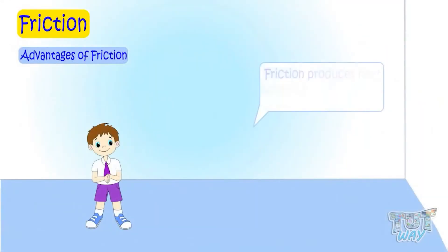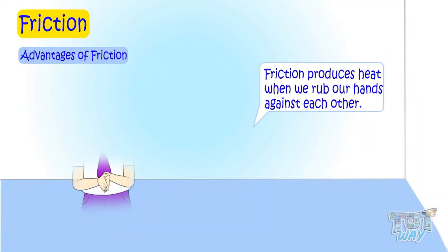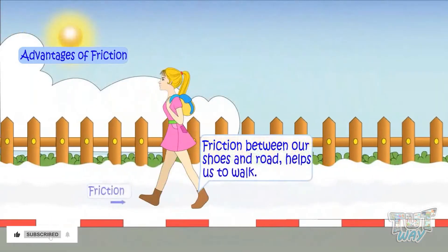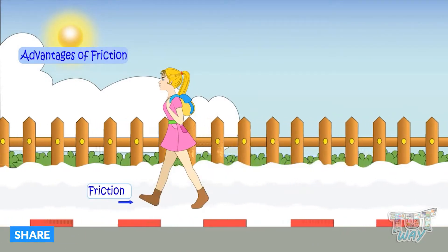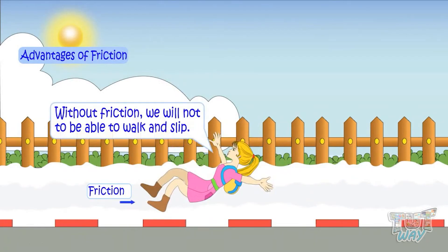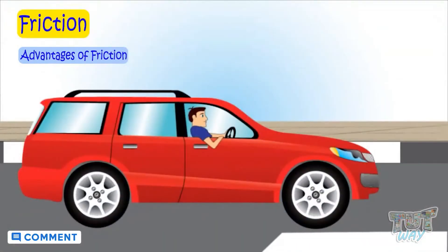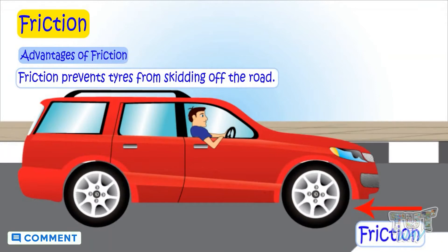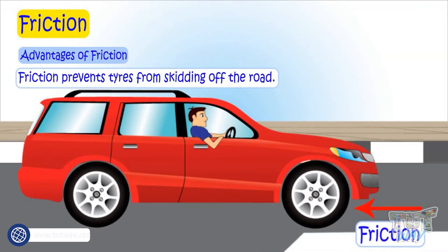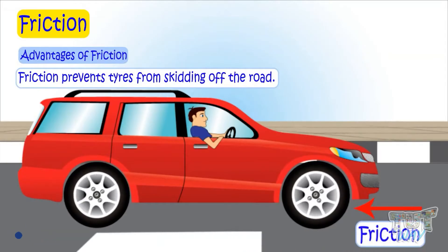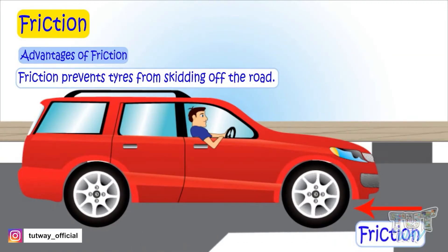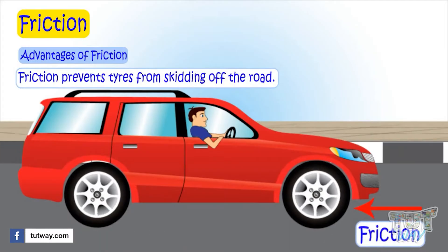Friction also produces heat. When we rub our hands, it produces heat which warms our hands. Friction between our shoes and the road helps us to walk — without friction, we will slip or fall. Friction helps to prevent the tires from slipping on the road, because wheels need friction to have grip and move forward. This is the reason tires have grooves to produce sufficient friction.